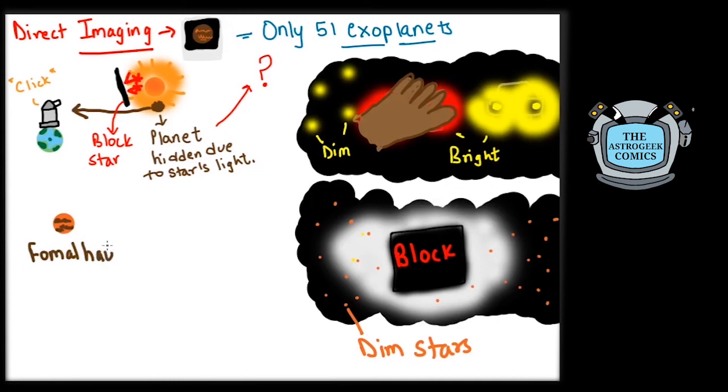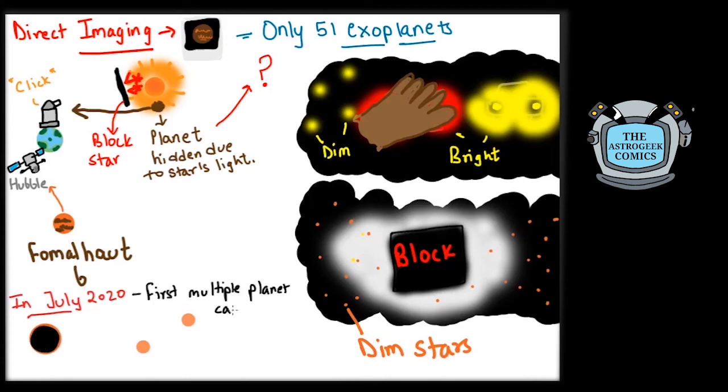The first exoplanet to be directly imaged was Fomalhaut b, around the star Fomalhaut, by Hubble Space Telescope. We made a big leap in July 2020 when a multiple-planet system with two exoplanets was directly imaged for the first time.